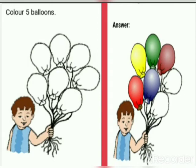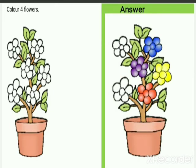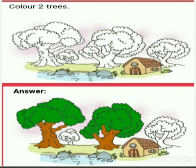Open page number 32 — color five balloons. Children, first count five balloons, then color the five balloons: one, two, three, four, five. Color four flowers. Count four flowers, then color the flowers: one, two, three, four.